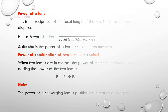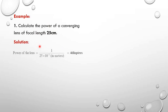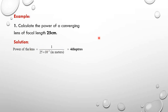Example 1: Calculate the power of a converging lens of focal length 25 centimeters. We must convert to meters: 25 cm equals 25 times 10 to the power negative 2 meters. Using power equals 1 over F in meters, the power equals 1 over (25 × 10⁻²), which gives 4 diopters.